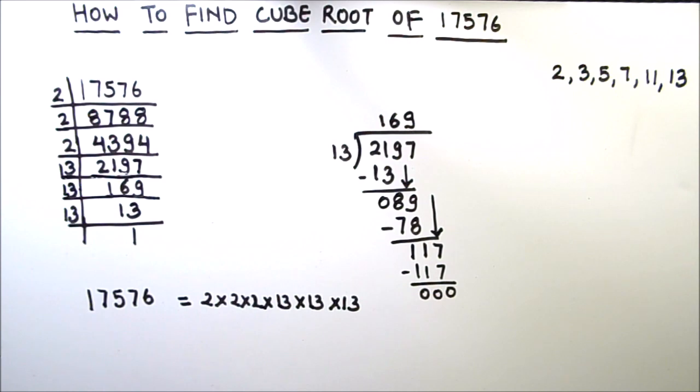So we got the factors of 17,576 as 2 times 2 times 2 times 13 times 13. So now as we are finding the cube root, we are going to take cube root on both the sides. So this will be 17,576 cube root is equal to cube root of 2 cube times 13 cube. So cube root of a cubic number is the number itself. So this is 2 times 13.